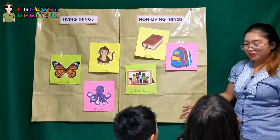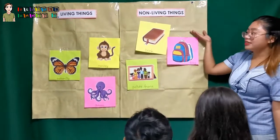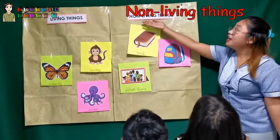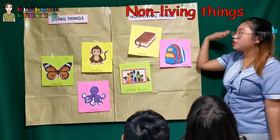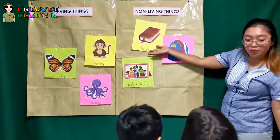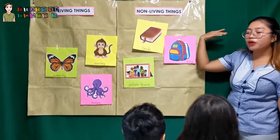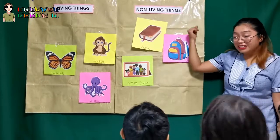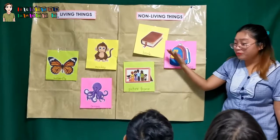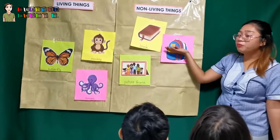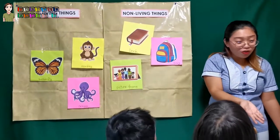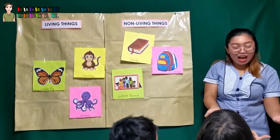Okay, now let's move on to this side. So this side is the non-living things. You have here a — what do you call this? Book. Okay, what is your favorite book? I don't know. How about you? Hot Wheels. Hot Wheels book. Okay.